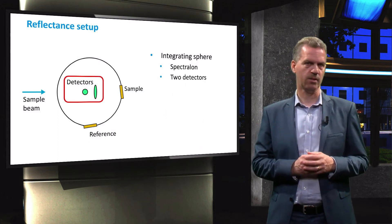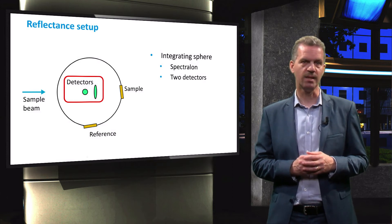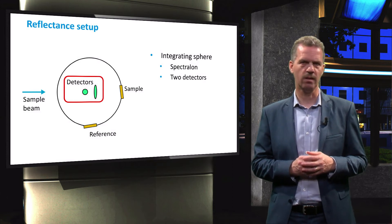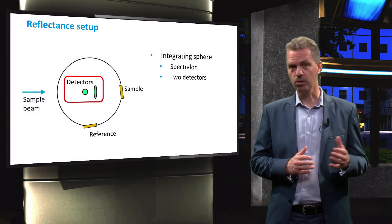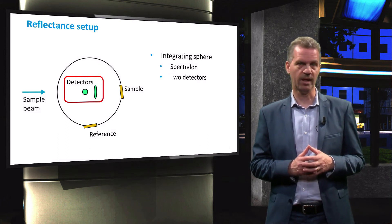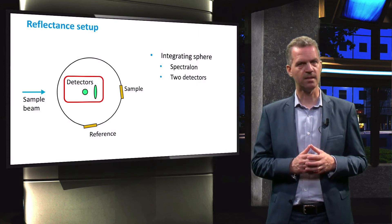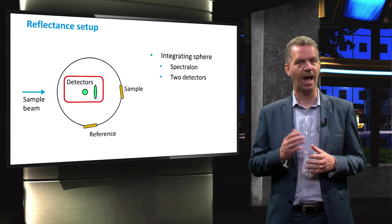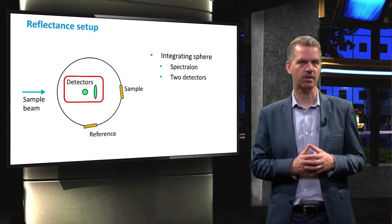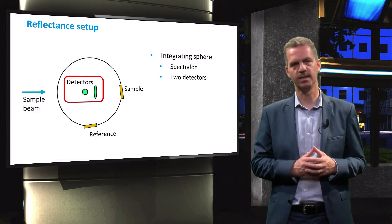Two different detectors are located on the bottom of the sphere, that each measure light intensity in different wavelength ranges. A photomultiplier tube is used for wavelengths up to 860 nm, which is a highly sensitive sensor for ultraviolet and visible light. And a lead sulphide photodetector is used for measuring the photon flux at wavelengths above 860 nm.